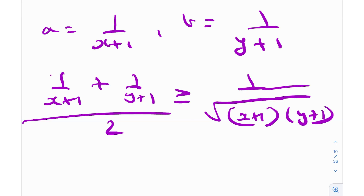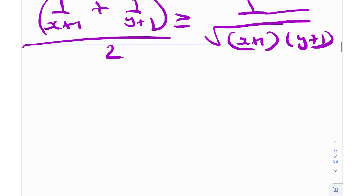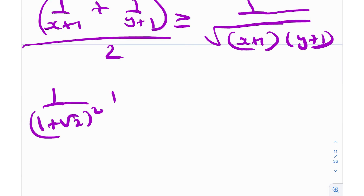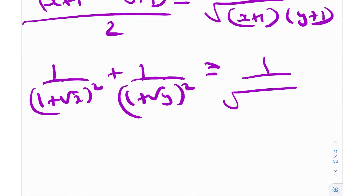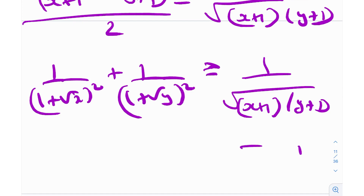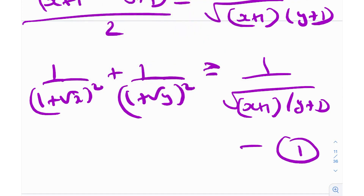So we can write: 1/(1 + √x)² + 1/(1 + √y)² ≥ 1/√((x+1)(y+1)). Let's label this as equation number 1 — that's one result we have obtained.